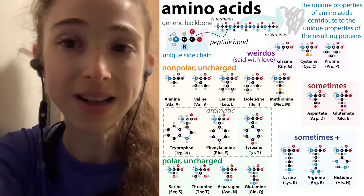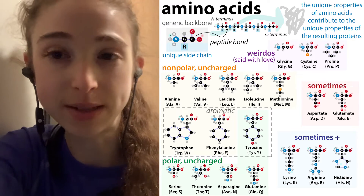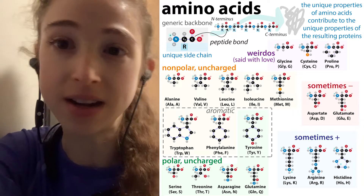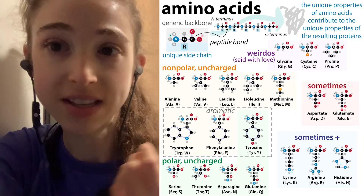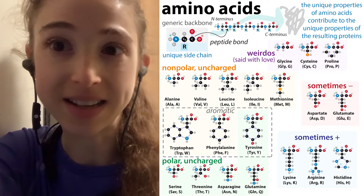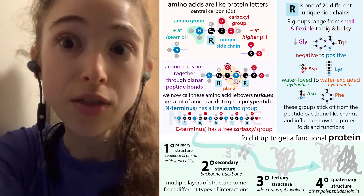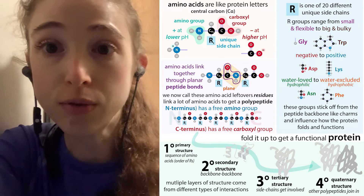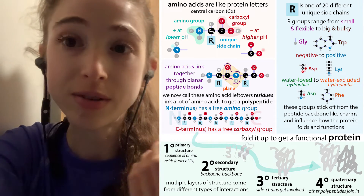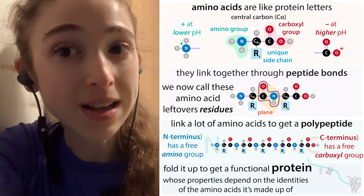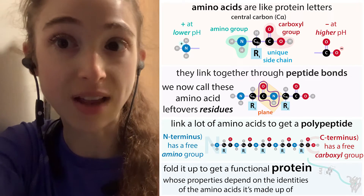There are 20 common amino acids and each of them has one of these unique side chains. Some are small, like glycine; some are big and bulky, like tryptophan. Some are negatively charged, like aspartate and glutamate. Some are positively charged, like arginine, lysine, and histidine. Because these amino acids have different side chains, what's left over when they link together — what's sticking off those chains — those residues are going to be different too. We can't call them amino acids anymore, so we refer to them as residues, because it's the residuals, the stuff that's left over.